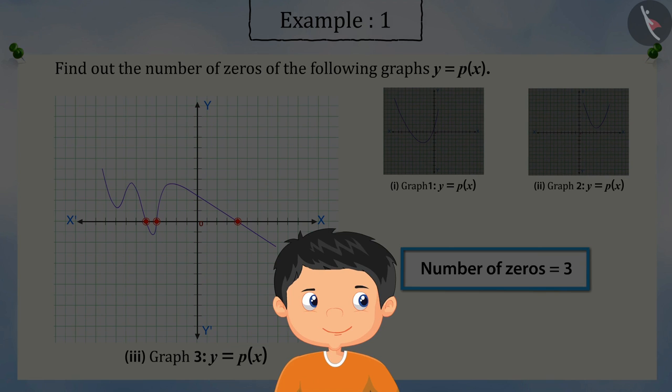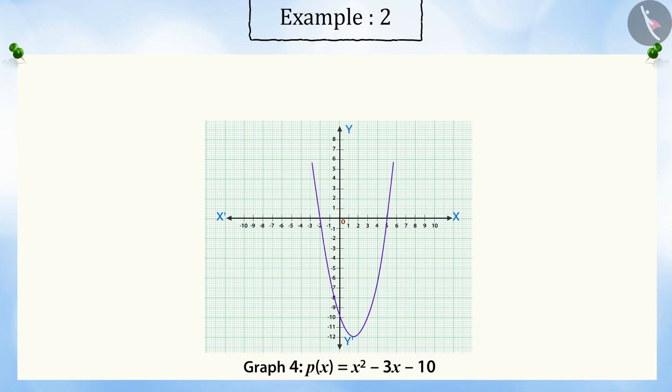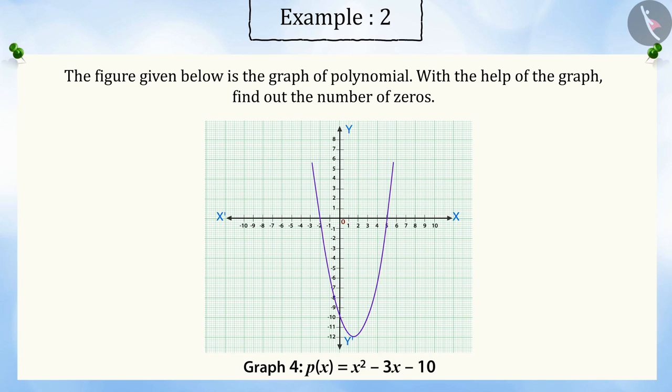Let's look at another example. The figure given below is the graph of a polynomial. With the help of the graph, find out the number of zeros.